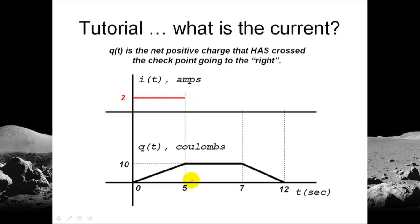And between 5 and 7, well, the slope is 0, so the current is 0 there. And between 7 and 12, the slope of q is negative. That means that the current is negative and it's constant. You see, the constant slope is 10 coulombs in 12 minus 7, 5 seconds. That is, negative 2 amps. That is the plot of the current as a function of time in this situation.